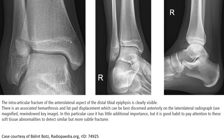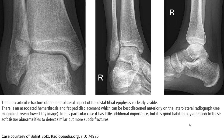Another example shows an intra-articular fracture of the anterior lateral aspect of the distal tibia epiphysis, which is clearly visible. There is an associated hemarthrosis and fat pad sign displaced, which can be best seen on the lateral radiograph. While in this particular case it has little additional importance, it is good to pay attention to this abnormality to detect similar but more subtle fractures.